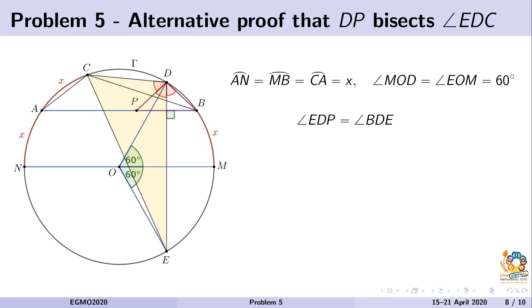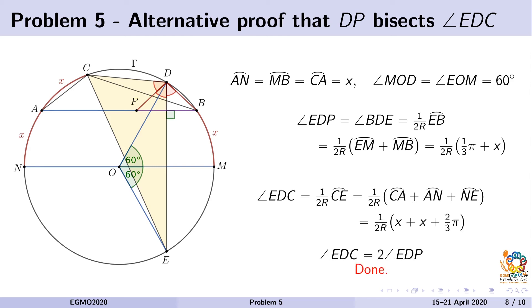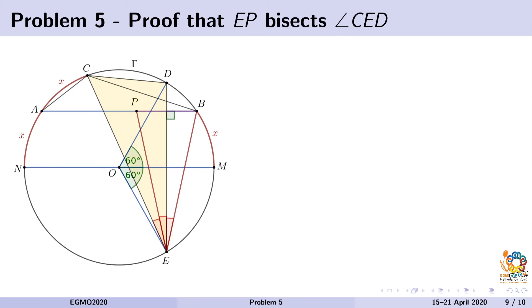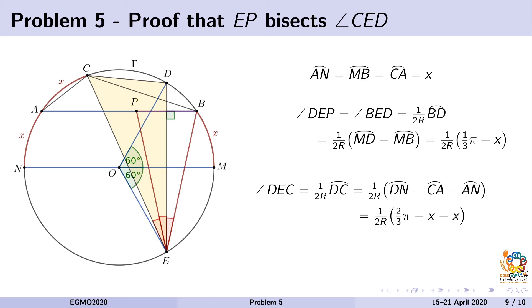To count the angles, we can say that angle PDE equals angle EDB by symmetry, and we can calculate it using the value of arc BME and knowing that arc ME equals 60 degrees. After that, we can calculate the value of angle CDE and show that it's twice the previous angle, which finishes the proof that PD is the angle bisector. Absolutely similarly, by calculating angles and using 60-degree values, we could have proven that PE is the angle bisector, which was also possible.